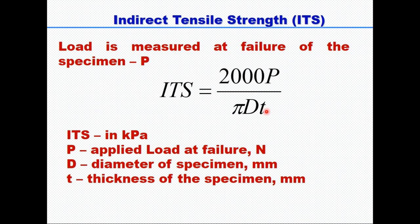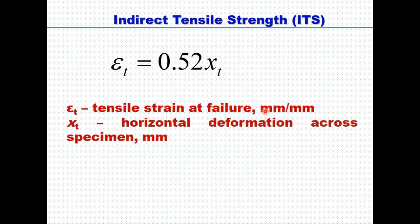Once you determine the load at failure P, ITS is calculated using the equation: ITS = 2000 × P / (π × D × t), where P is the load at failure in Newtons, D is the diameter of the specimen in millimeters, and t is the thickness of the specimen. The tensile strain at failure (εt) is calculated using: εt = 0.52 × Xt, where Xt is the horizontal deformation across the specimen.